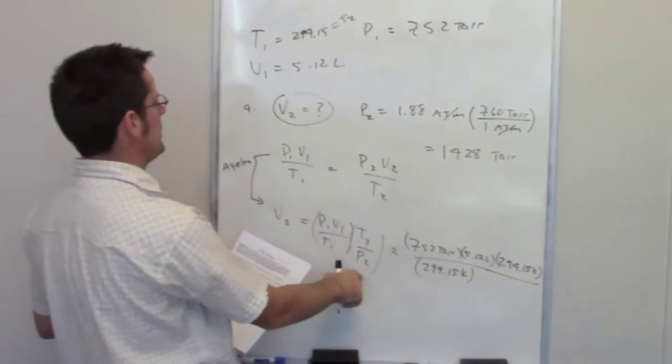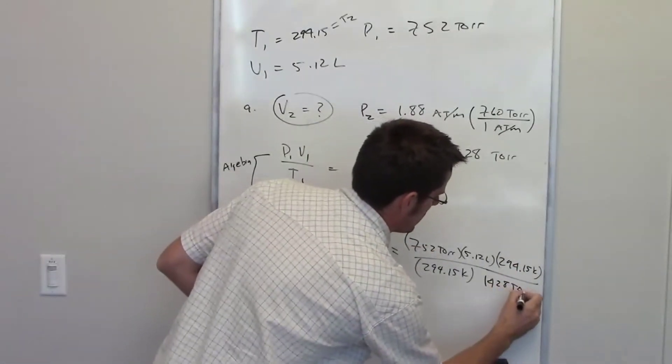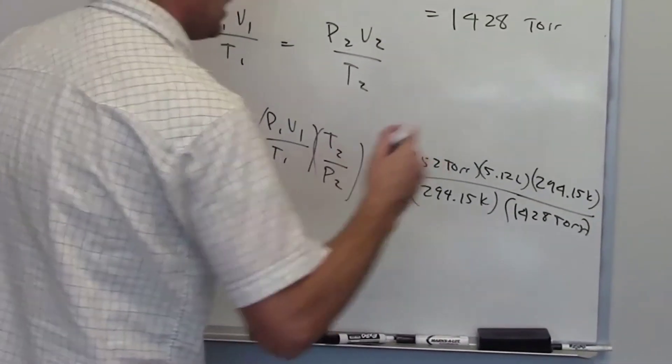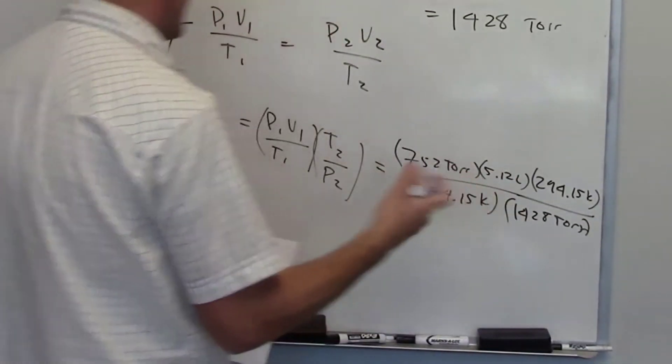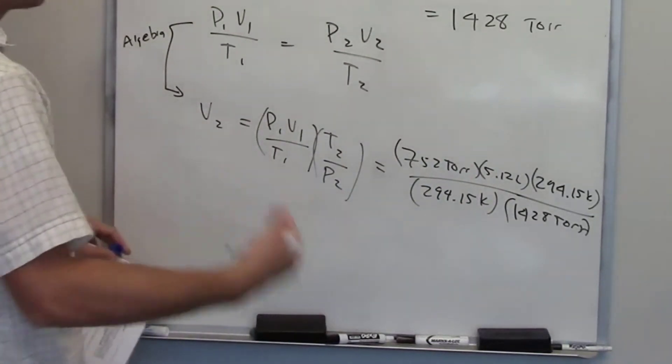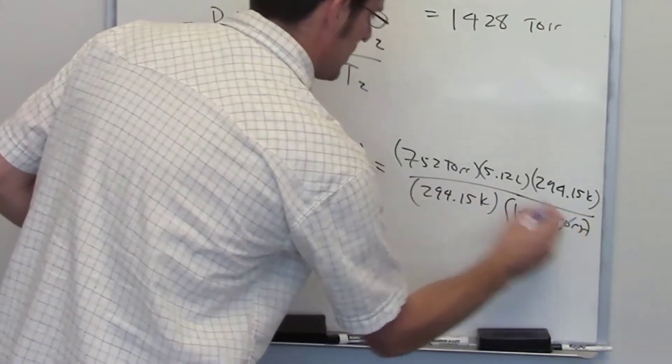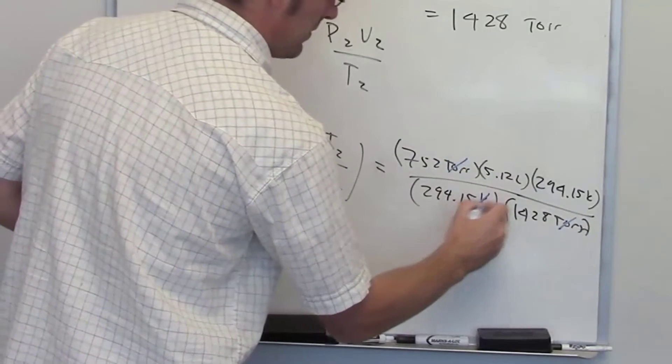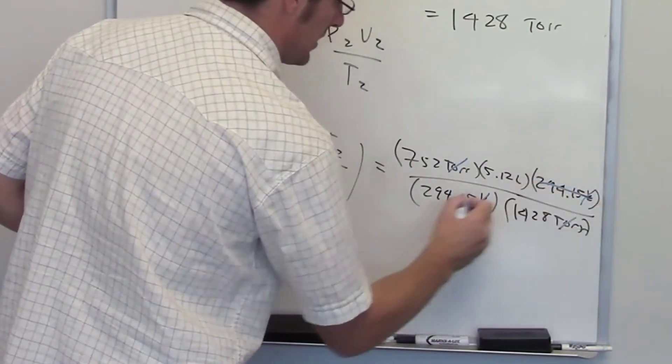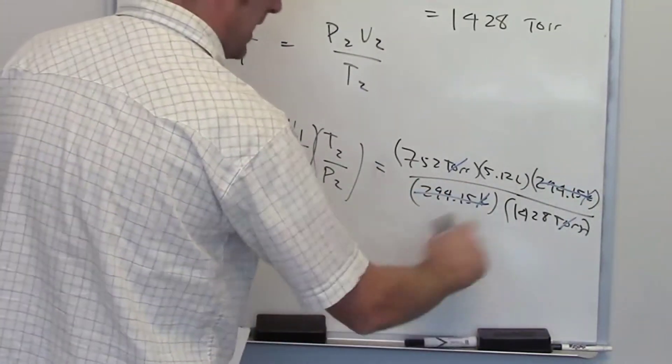And for P2, it's 1428 torr. One thing that's beautiful about this is you should see, if you set it up properly, that all the units cancel out and you should be left with the units you're looking for. We're looking for a volume, so we should be left with liters. The torrs cancel each other out. Conveniently, the Kelvins cancel each other out, as do the values 294.15. And I'm left with the only unit remaining, which is liters.